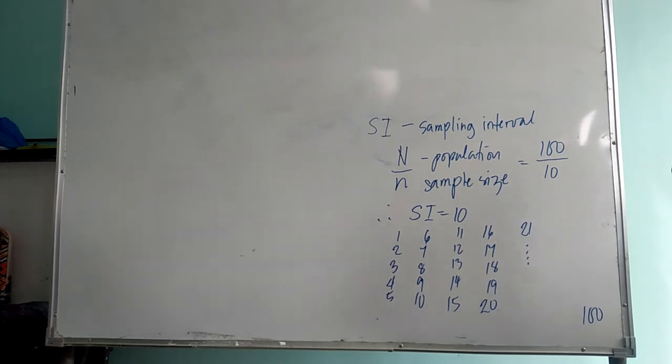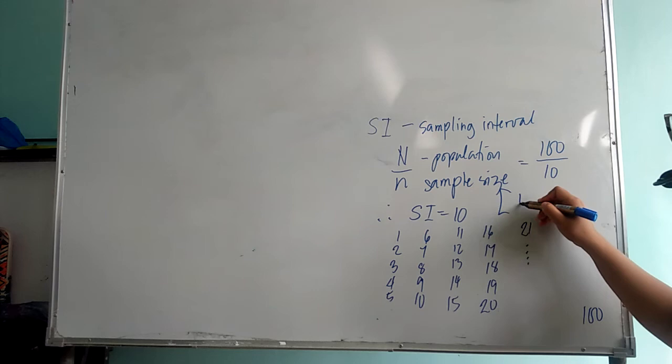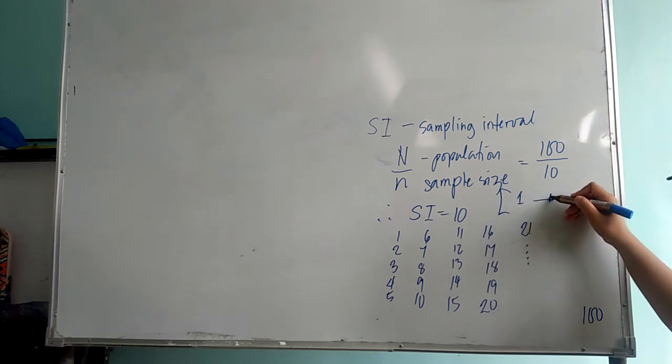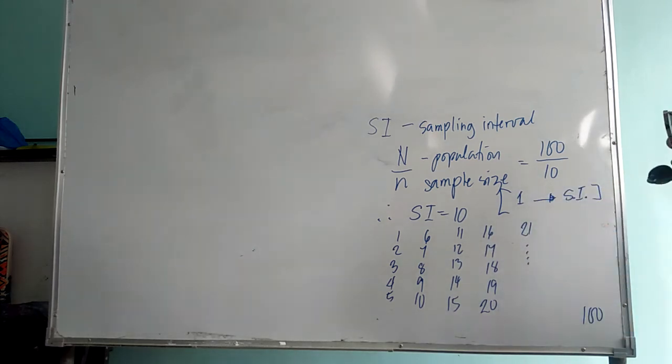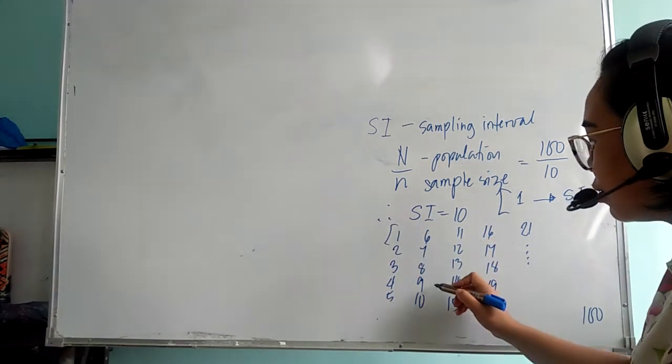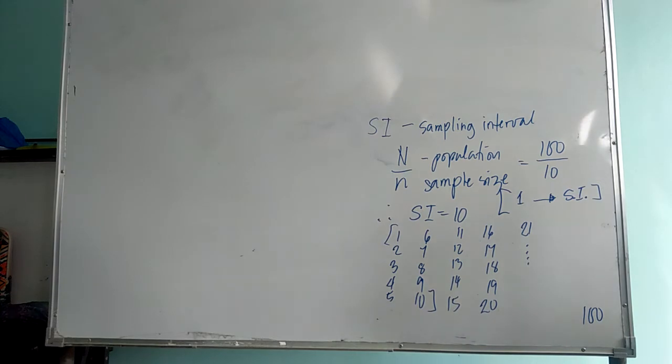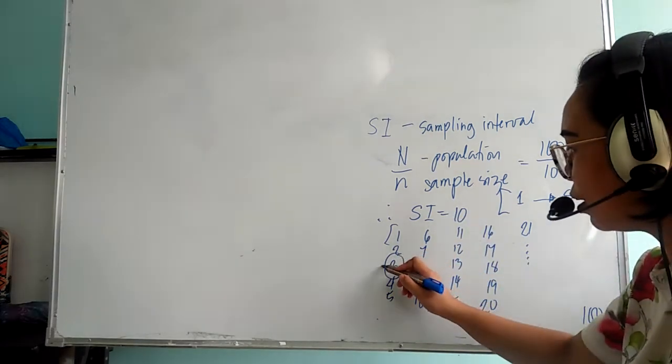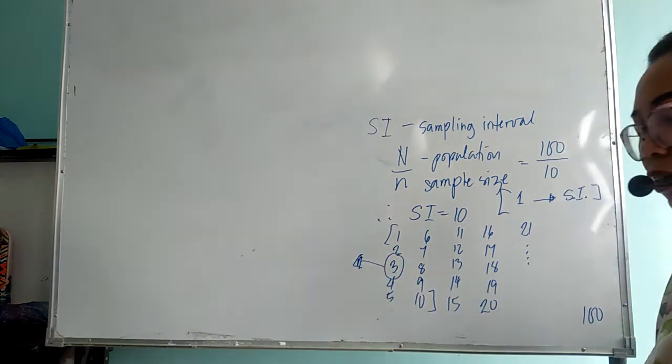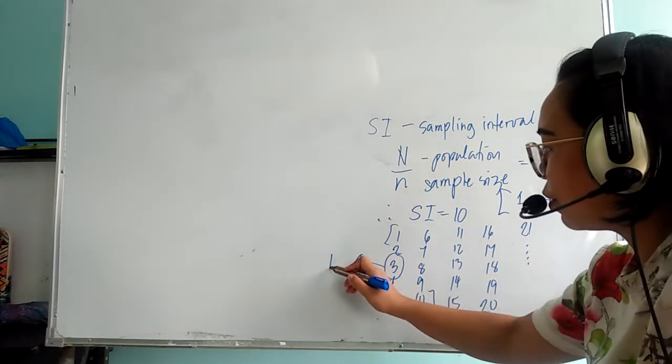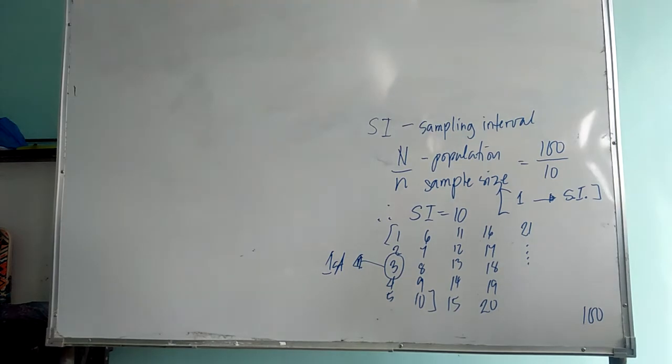You have to select a starting point from one to your sampling interval. Since your sampling interval is 10, you have to select from one to ten as your starting point. Let's say for example you pick number three as your starting point. That is also considered as your first sample.